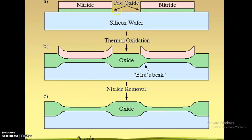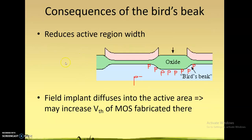After the nitride has been removed, this is what the field oxide looks like, with the pad oxide visible here. The bird's beak problem reduces the active region — the field oxide has encroached into the region that was supposed to be active area. So the active region width reduces.